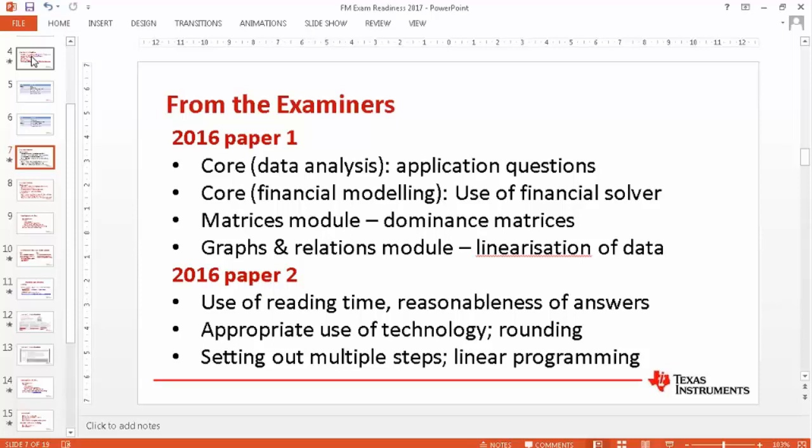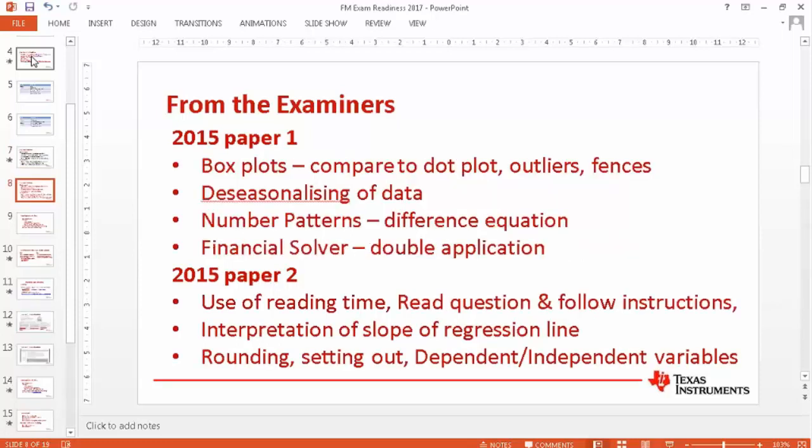In the 2016 examiner's reports, I've just called out a few of the many things that the examiners have said. Notice that they've got some comments regarding both parts of the core. And these are areas that they felt that students needed to practice on a little bit more. This is not an exclusive and exhaustive list, but it does highlight some of those features. And certainly in a couple of the modules that I've listed for the matrices and the graphs and relations for paper one, and then some general things in paper two. And notice the usual friends that we've had, rounding, the reasonableness of answers. Students need to use reading time. And where more than one mark is attached to an answer, their ability to set out the multiple steps. And certainly technology can help with all of that.